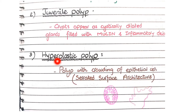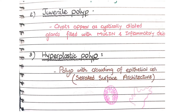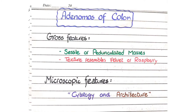Remember that in hyperplastic polyps you see crowding of epithelial cells and the surface is serrated. These are the three types of colonic polyps. Now let's move to the pathological features of adenomas of the colon.